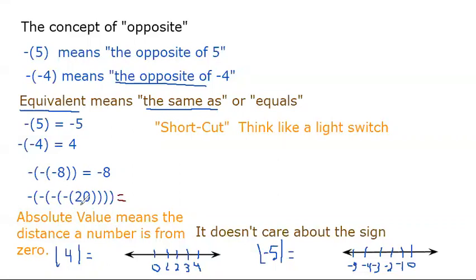Here I have a 20. The opposite of 20 is a negative 20, the opposite of a negative 20 is a positive 20, the opposite of a positive 20 is a negative 20, and the opposite of a negative 20 is a positive 20. So it kind of goes back and forth — that's a mouthful.